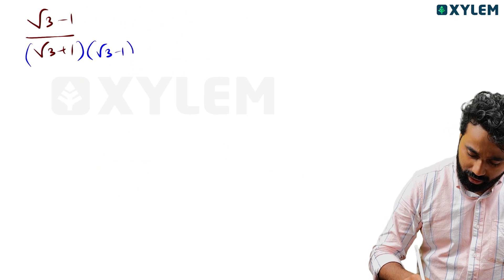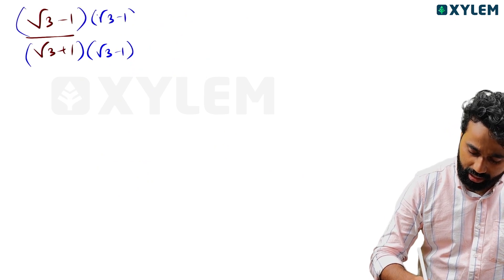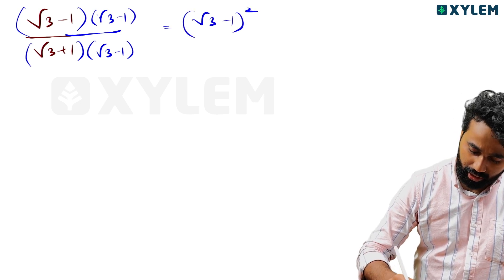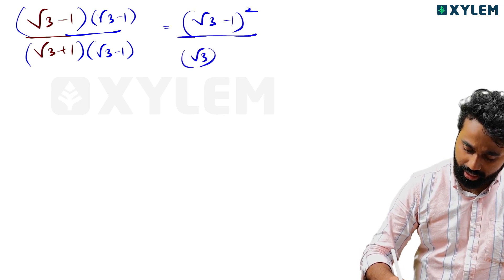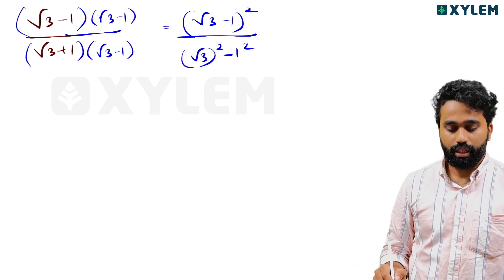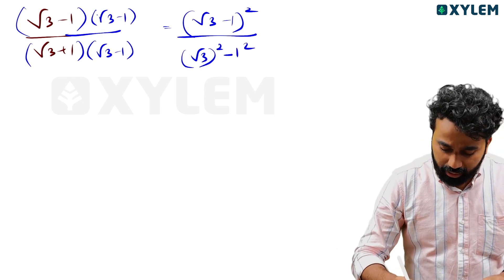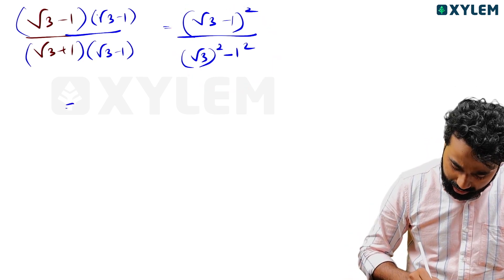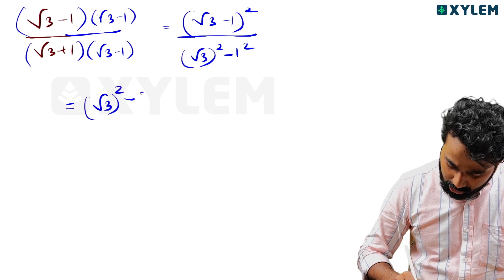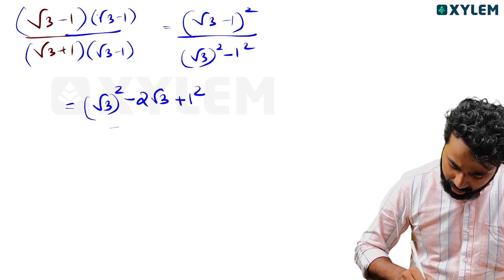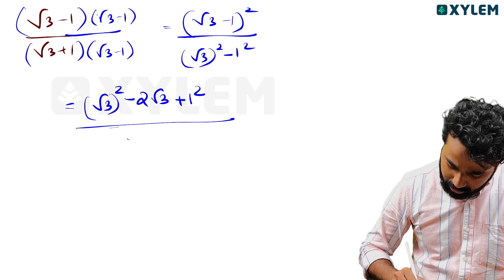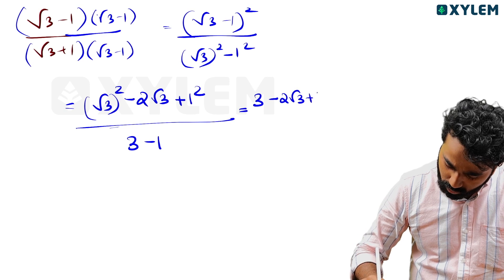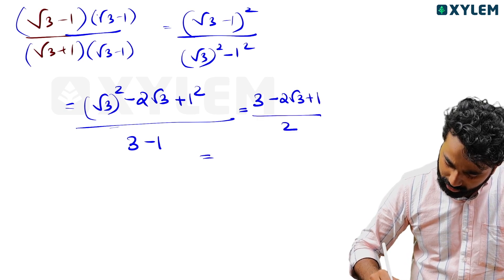So the answer is root 3 minus 1 into 2 multiplied by root 3 plus 1 into root 3 minus 1 into 2 multiplied by root 3 minus 1 into 2 multiplied by root 3. Root 3 minus 1 whole square in the final: a square minus 2ab plus b square divided by a square minus b square, that is 3 minus 1.